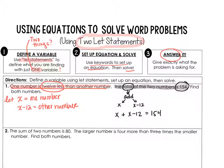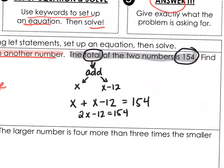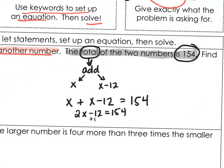Now we will solve the equation. Combine like terms, add the 12, and we get 2x is equal to 166. Divide by 2, and we get that x is 83.